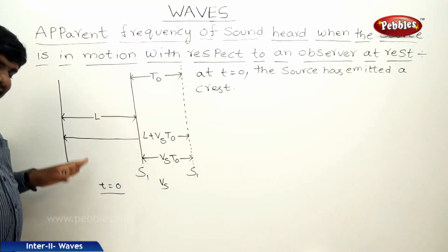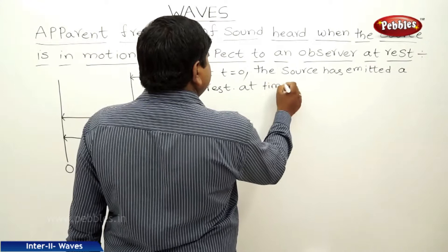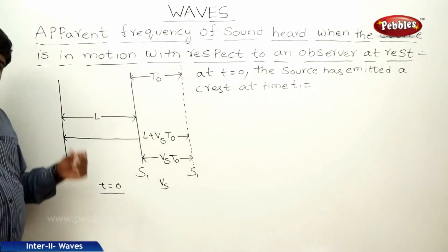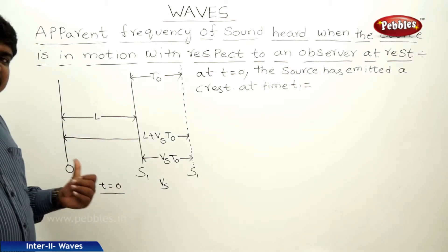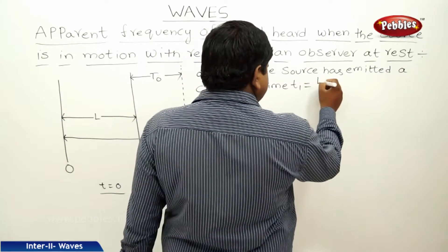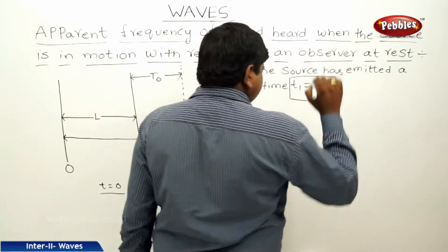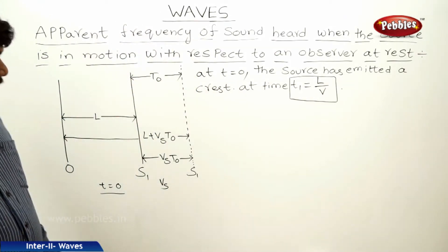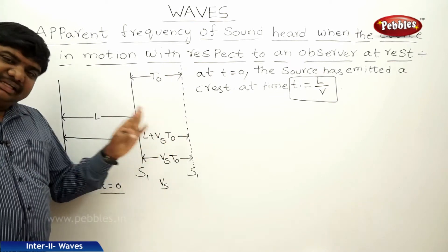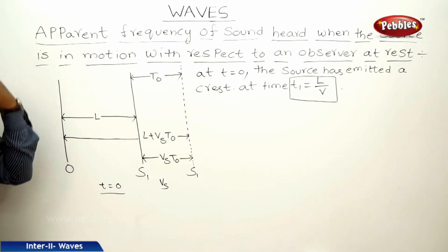This first crest will reach the observer at time T1. Since speed equals distance divided by time, T1 = L / V, where V is the speed of sound. At time T0, the source is now at position S2, which is at a distance L + Vs×T0 from the observer. At this position, the source has also emitted a second crest, which will reach the observer after some additional time.